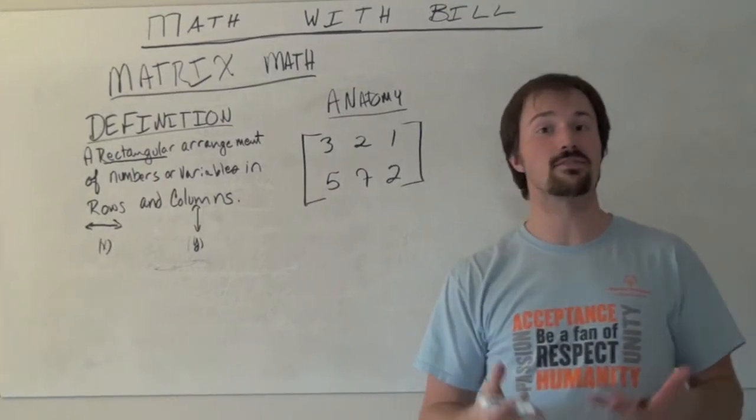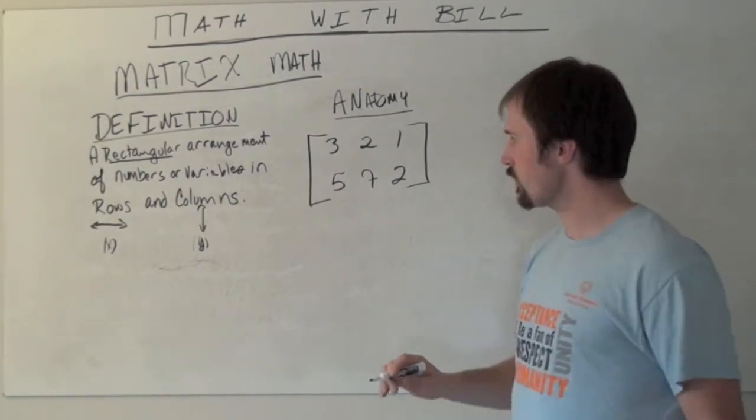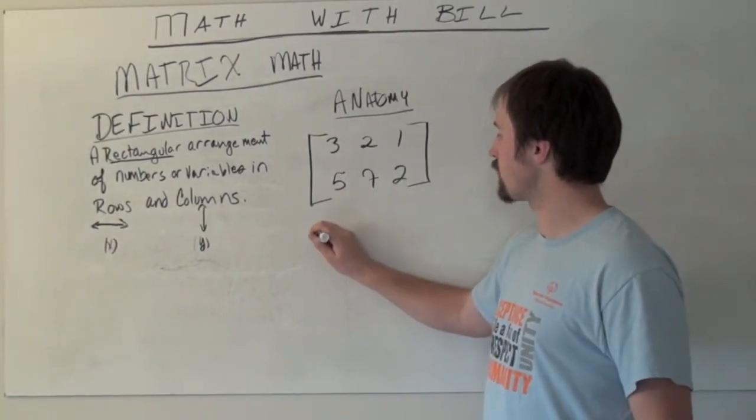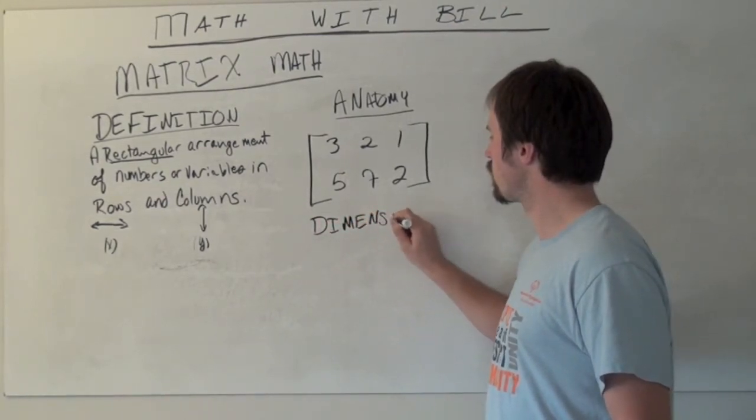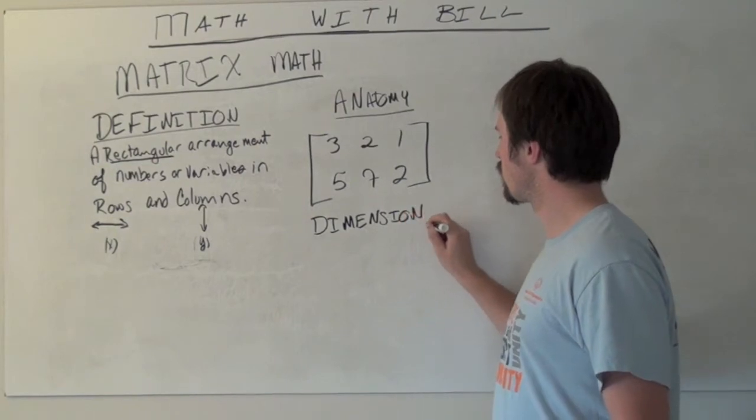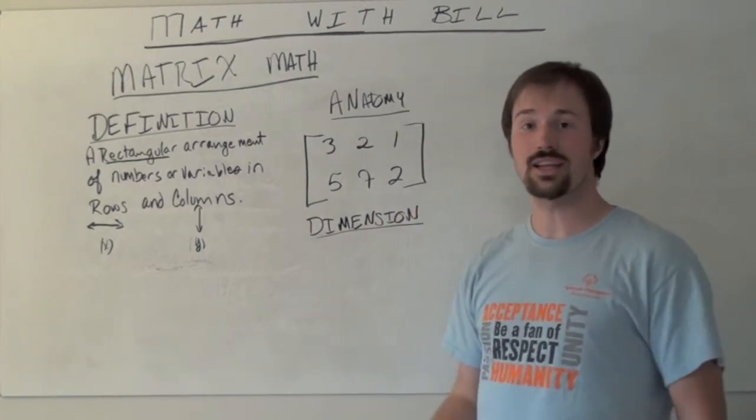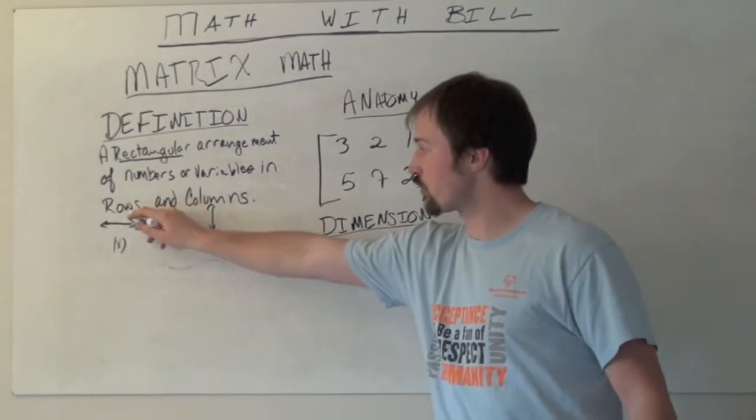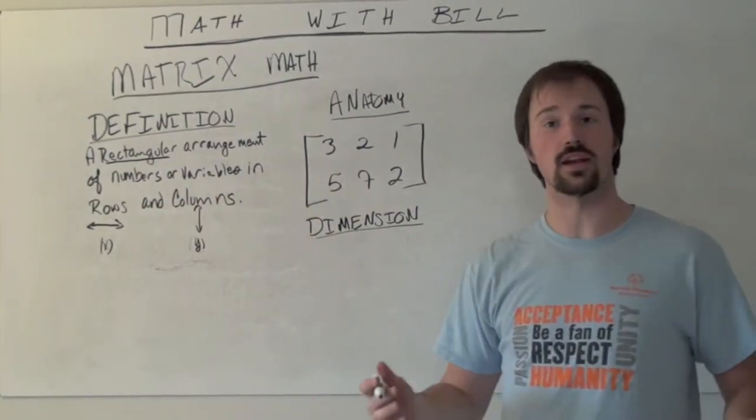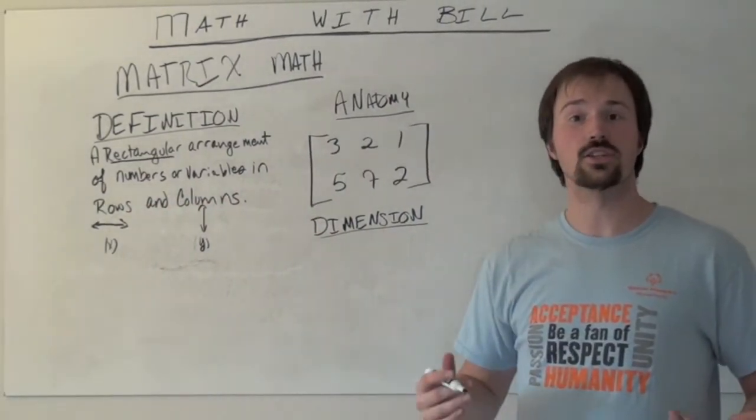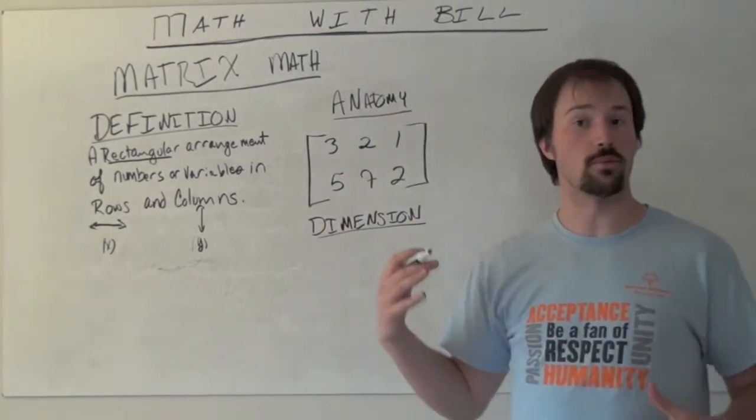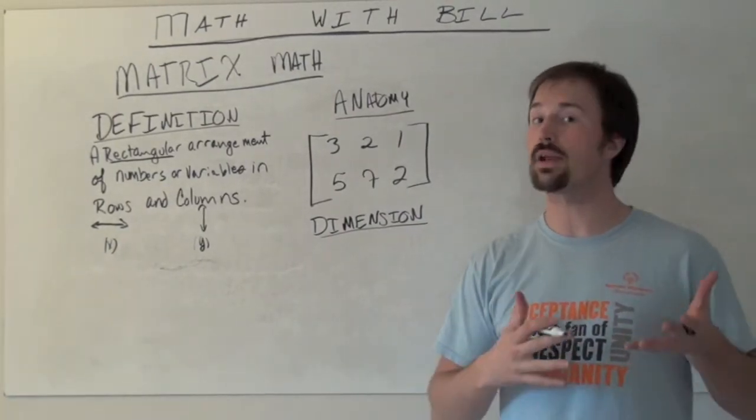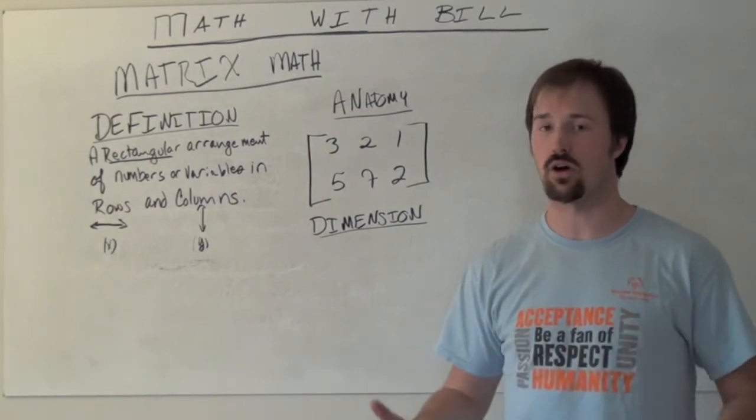So here we have six different entries and the way we name a matrix is by a thing called its dimension. And the dimension is named by the number of rows and columns that it has. So it doesn't talk so much about the entries or the numbers inside, but just about how many rows do we have and how many columns do we have.